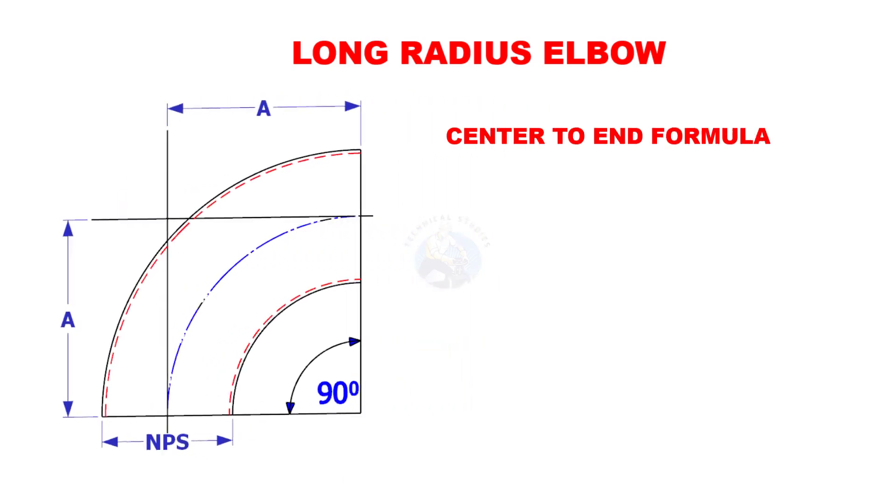Centre to end formula. Assume that A is the centre to end distance and NPS is the nominal pipe size.